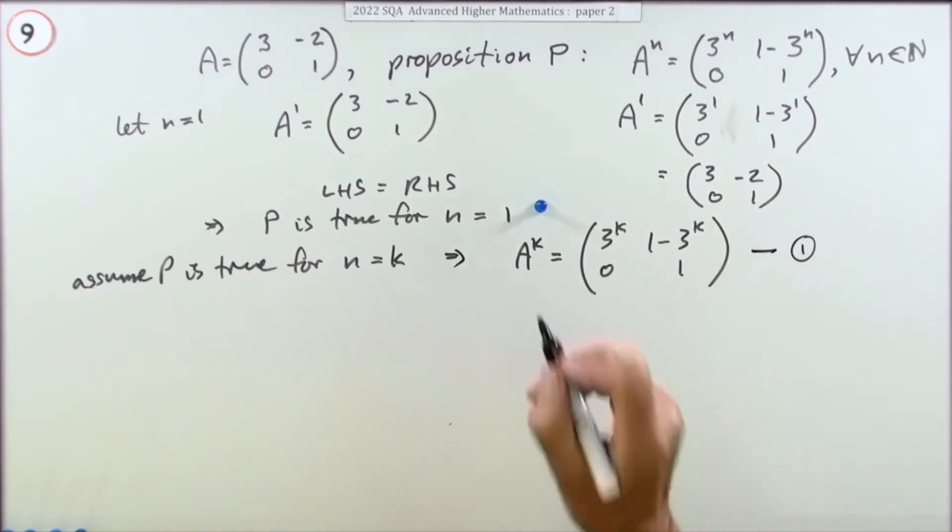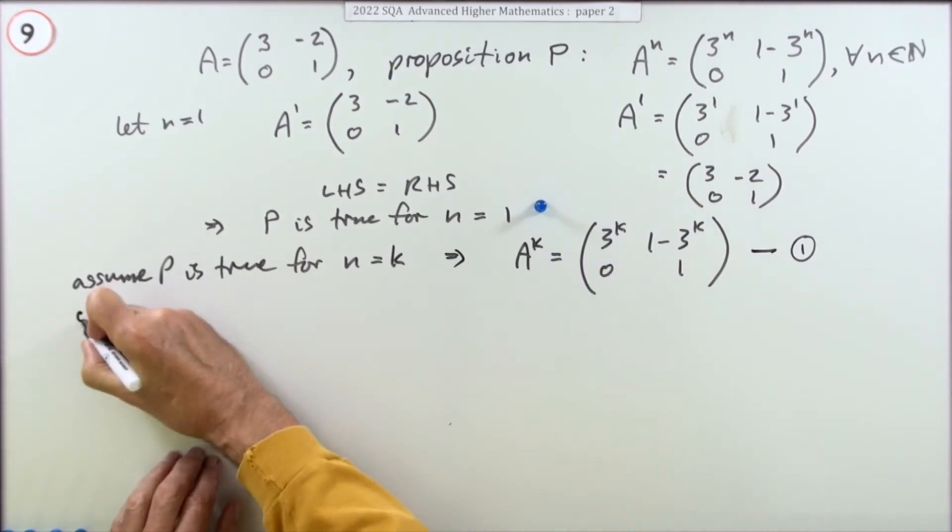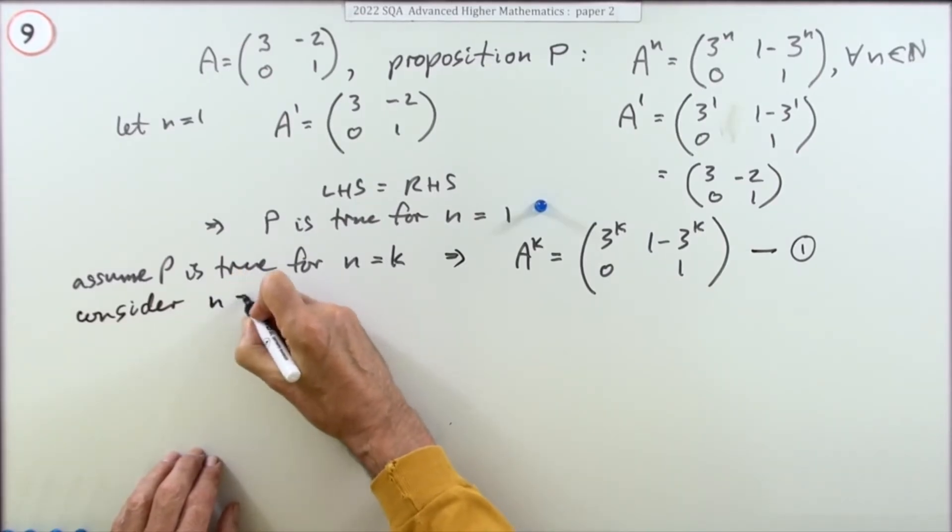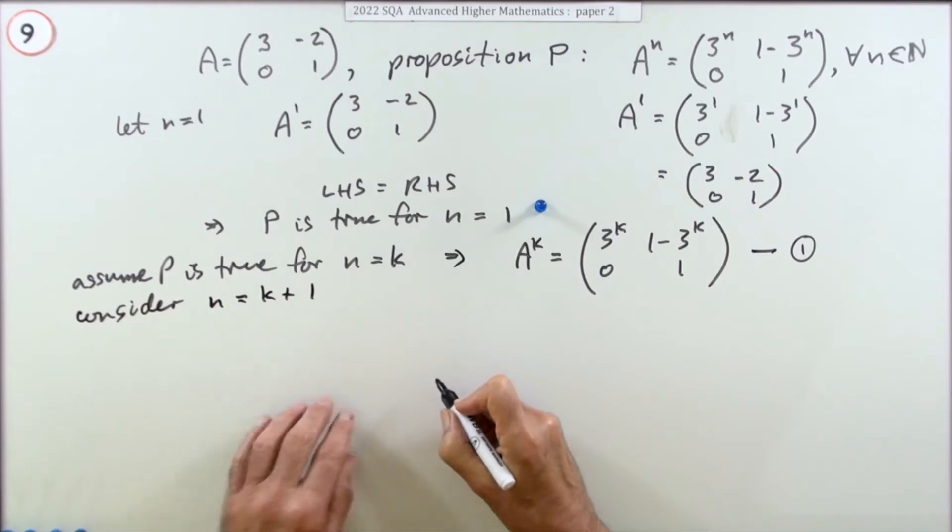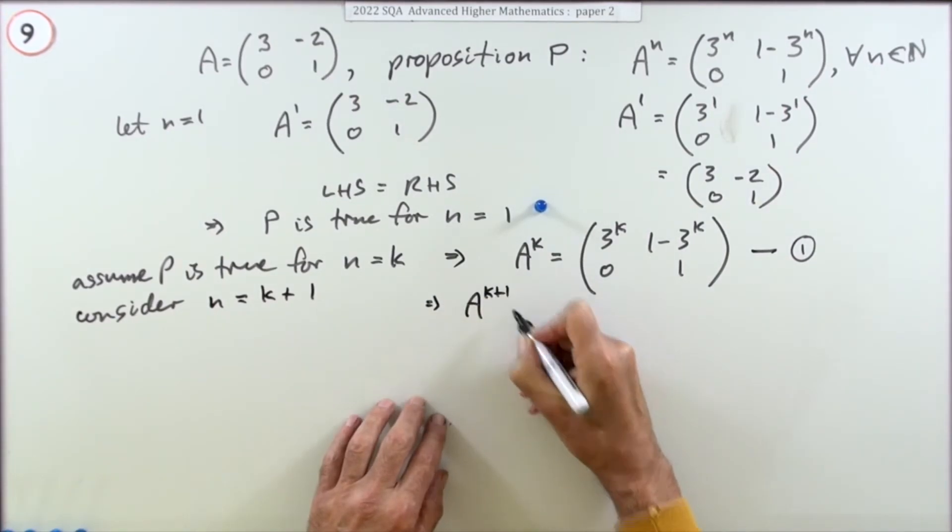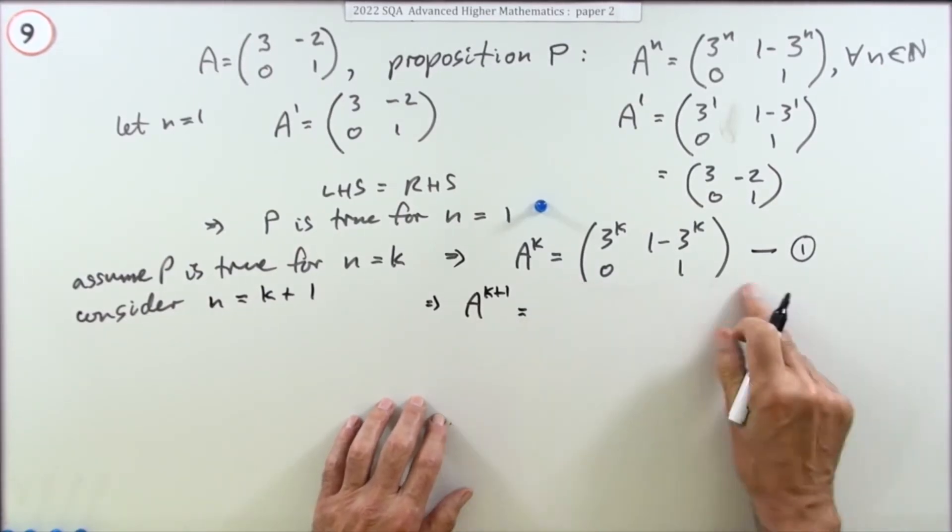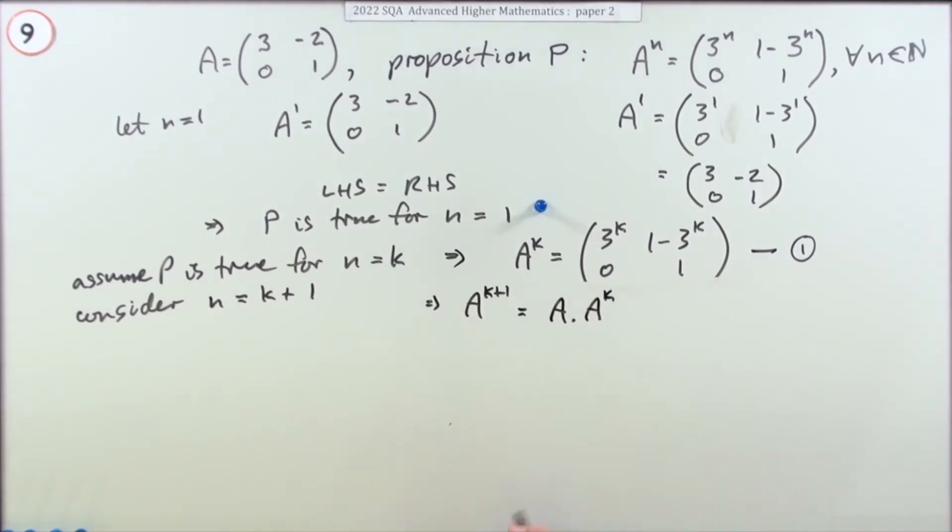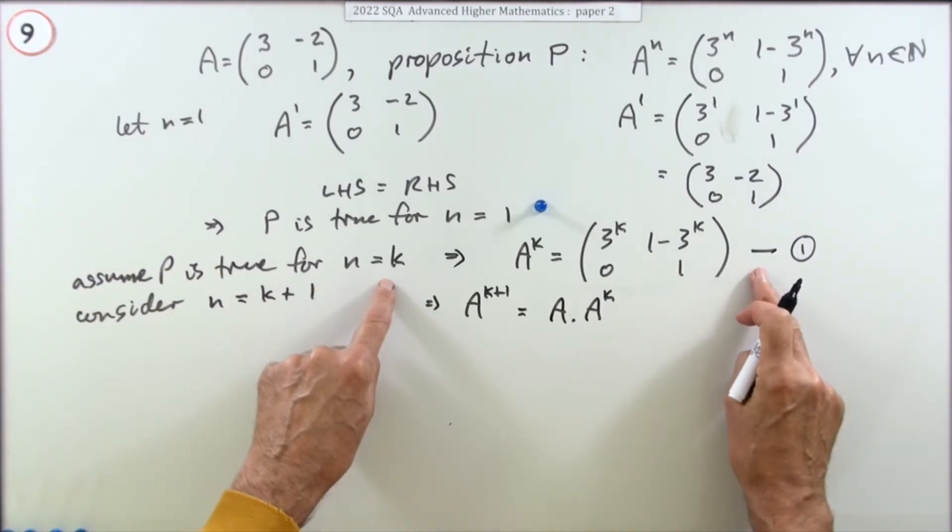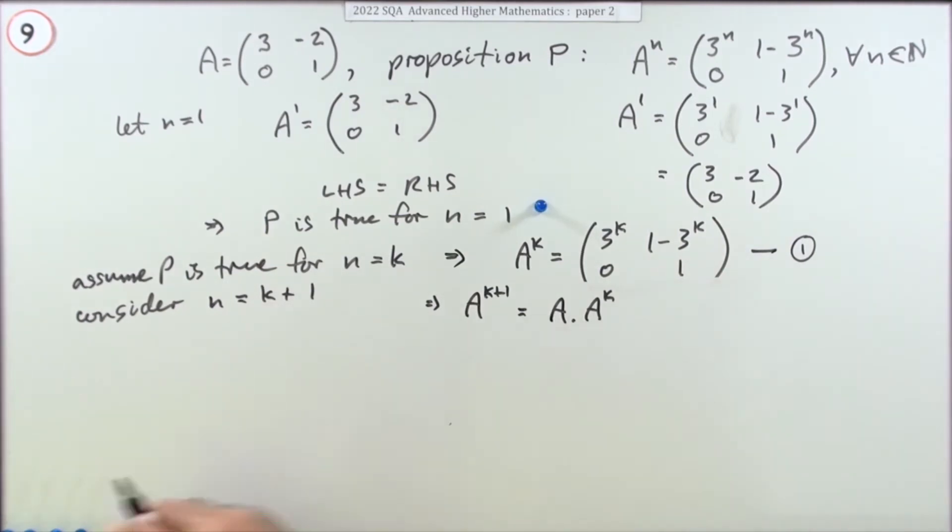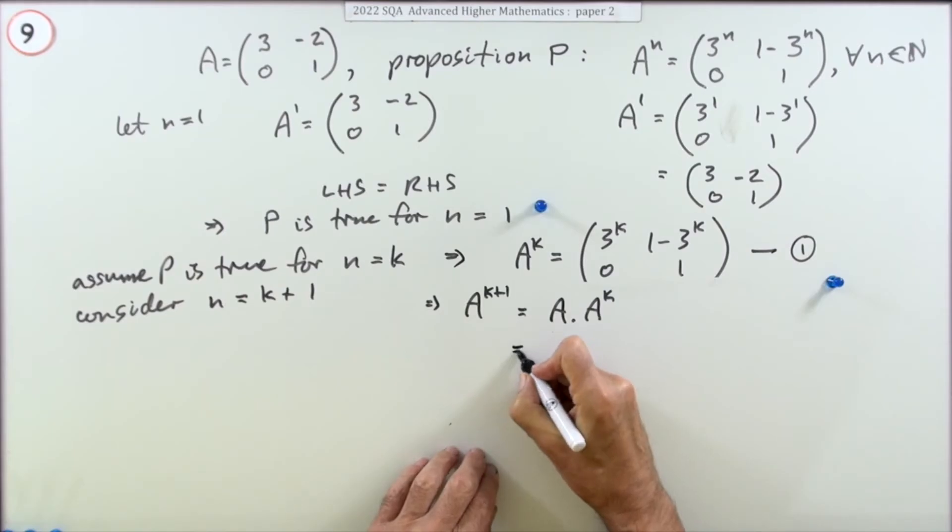So if it's true for that, what would happen if it was k plus 1? Consider the case of n equals k plus 1. What would happen? Well, what should happen is if I've got A to the k plus 1, that would obviously be A times A to the k. Just for assuming it's true for a set value of k, making the inductive hypothesis, and then continuing to consider the next case, you get a mark.